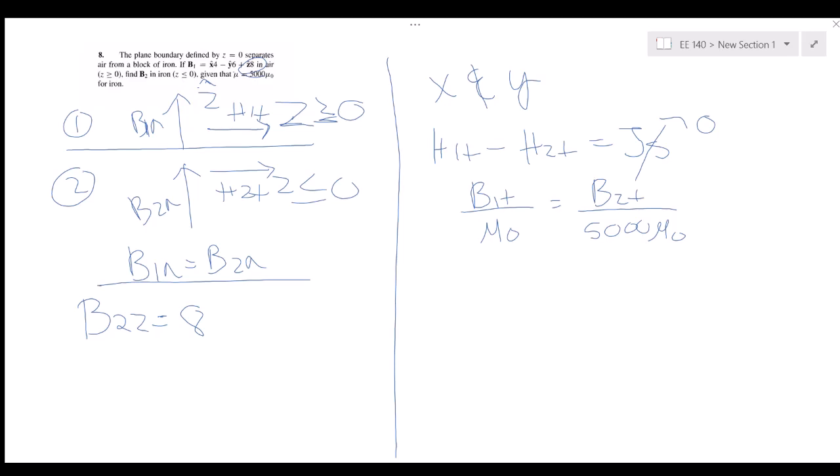And then since we're dealing with vectors, we have to do our x separately and our y separately. So let's do our x first. So b1x is 4 over mu naught, and then b2x is what we're solving for, and then we have 5000 mu naught. So then just cross multiply and b2x comes out to be 20,000.